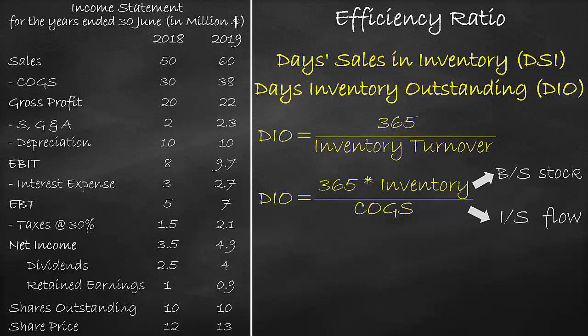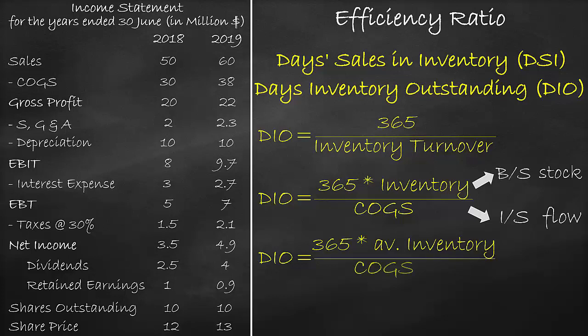So, we can rewrite the days inventory outstanding ratio as 365 times the average inventory divided by the cost of goods sold.